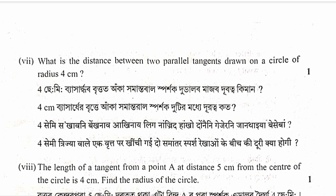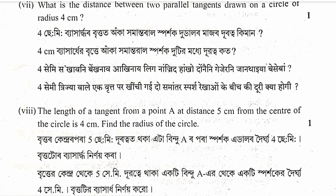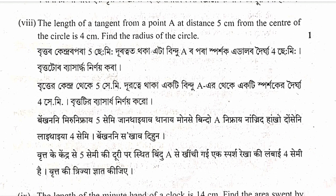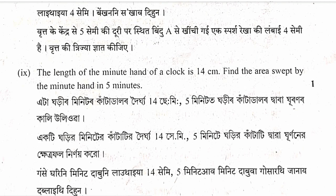Question: What is the distance between two parallel tangents drawn on a circle of radius 4 cm? The two parallel tangents are at the two ends of a diameter, so the distance equals the diameter equals 4 plus 4 equals 8 centimeters. Also: length of tangent from a point 5 cm from center, with radius 4 cm. Using Pythagoras: tangent length equals root of 5 squared minus 4 squared equals root of 9 equals 3 cm.